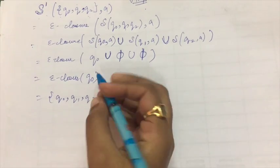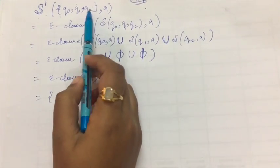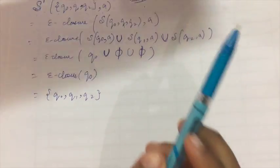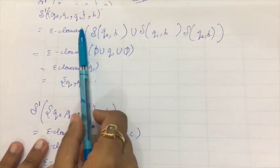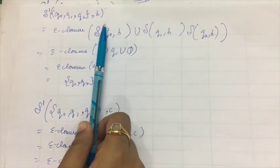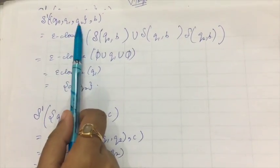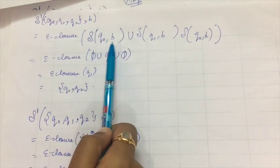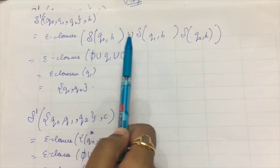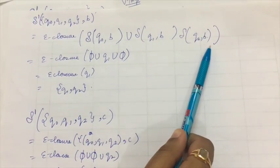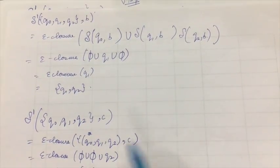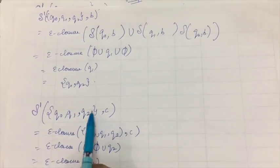We have found the new transition of this state with A. Now we find with B and C. The transition of this state with B equals the null closure of: transition of Q0 with B, then transition of Q1 with B, then transition of Q2 with B — which we can see from the given table. Similarly, we find the transitions of this state with C.